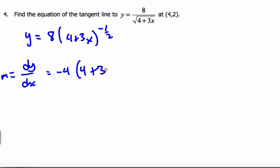(4 plus 3x) to take away 1 from negative, and I get negative 3 halves times. Now, here's the chain rule part. This is an inside function here. The derivative of the inside is just 3.